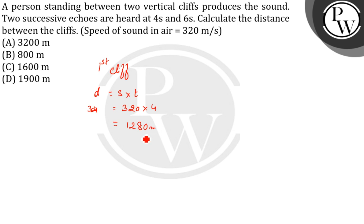So this is twice the minimum distance between the source of sound and the reflector. Now we'll find the distance for the second cliff.